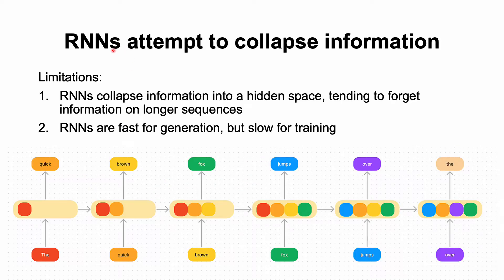RNNs essentially attempt to collapse information. There are a couple of limitations to this, though. When you're collapsing information into a hidden space, you tend to forget information on longer sequences. Say, here near the end, we forget what was at the beginning.